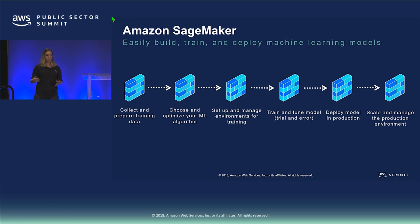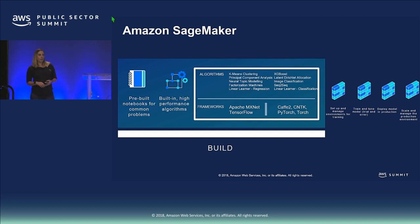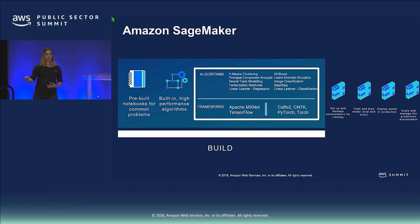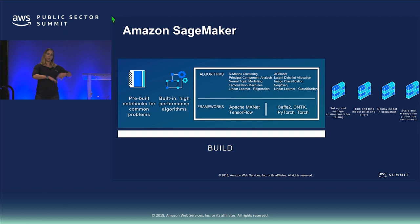SageMaker has three key components. The first is building. You can use a pre-built Jupyter Notebook — just click 'Start Notebook Instance' in the SageMaker console and start programming. It supports TensorFlow, MXNet, PyTorch, and Chainer, and we're constantly adding new algorithms — PyTorch actually just came out yesterday. If you have something beyond those, you can use a container and leverage SageMaker for training and deploying. It also has pre-built algorithms like K-Means, PCA, LDA, XGBoost, and image classification algorithms, letting you plug and play to find the best performance.